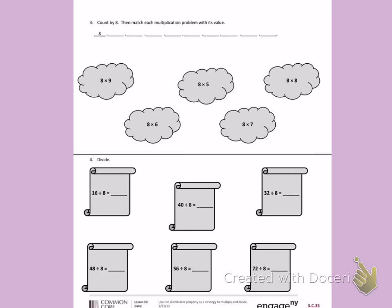So I already have an 8 written there. I know 8 plus 8 more is 16. To find the next number, I'm going to add 8 more to 16. 16, 17, 18, 19, 20, 21, 22, 23, 24.